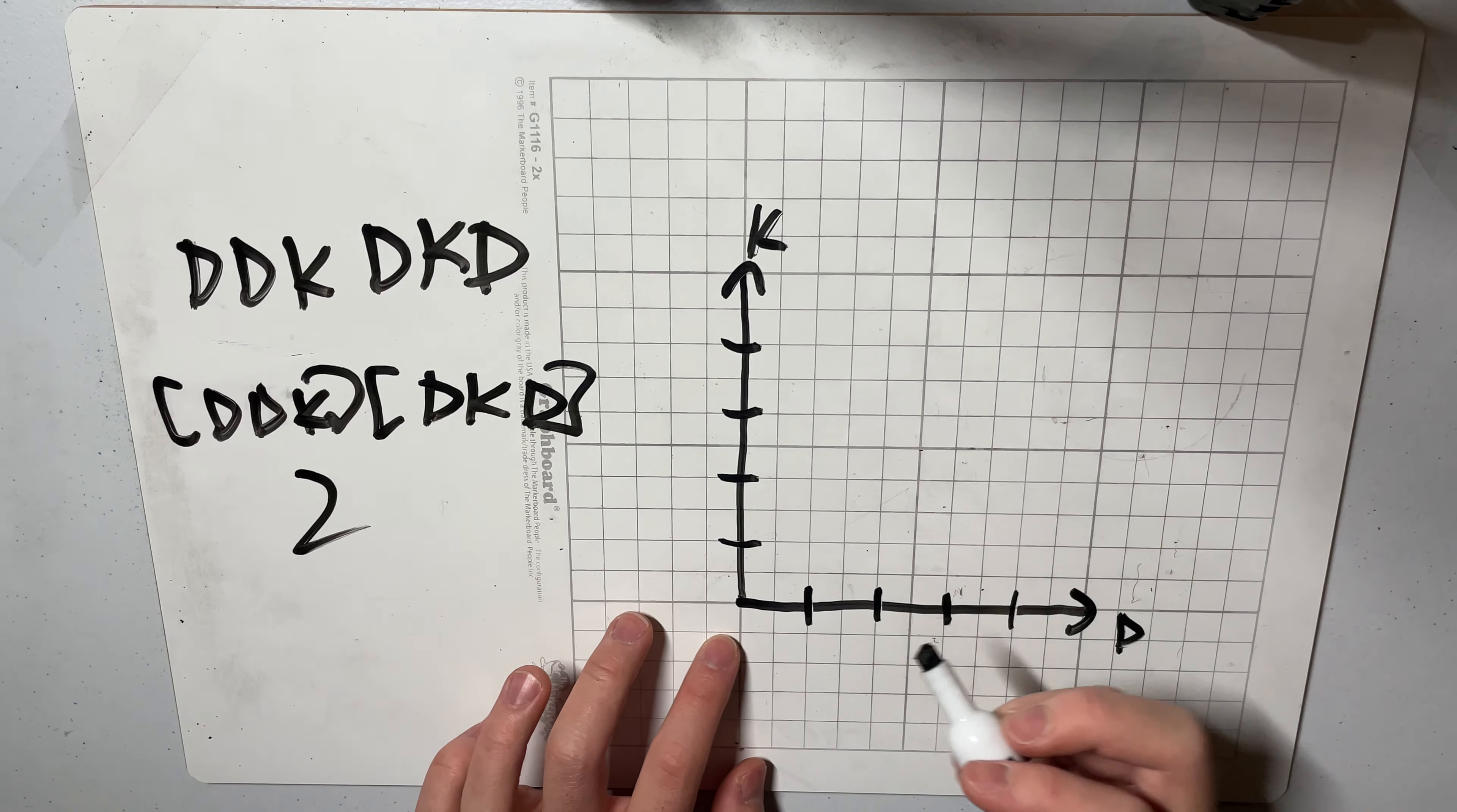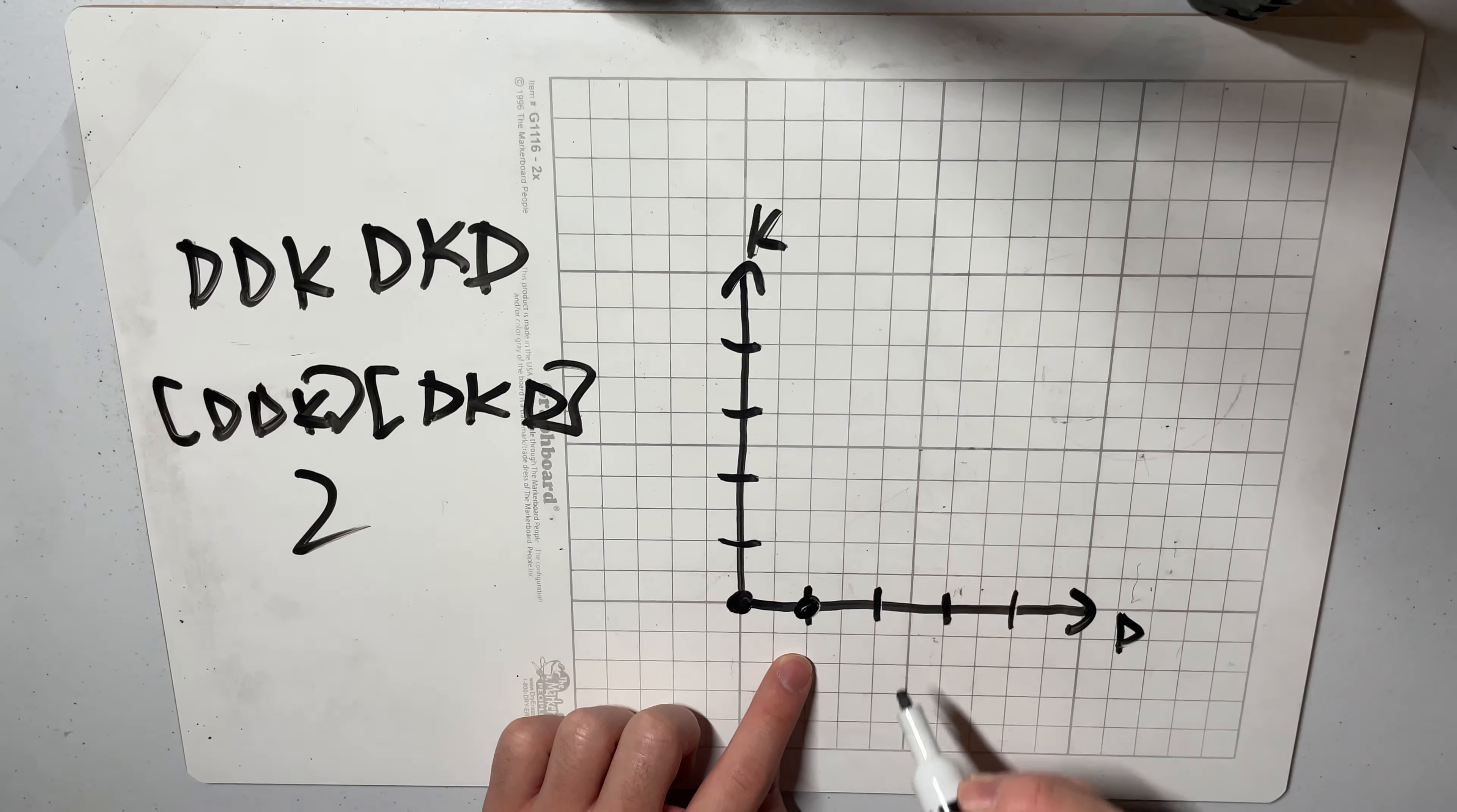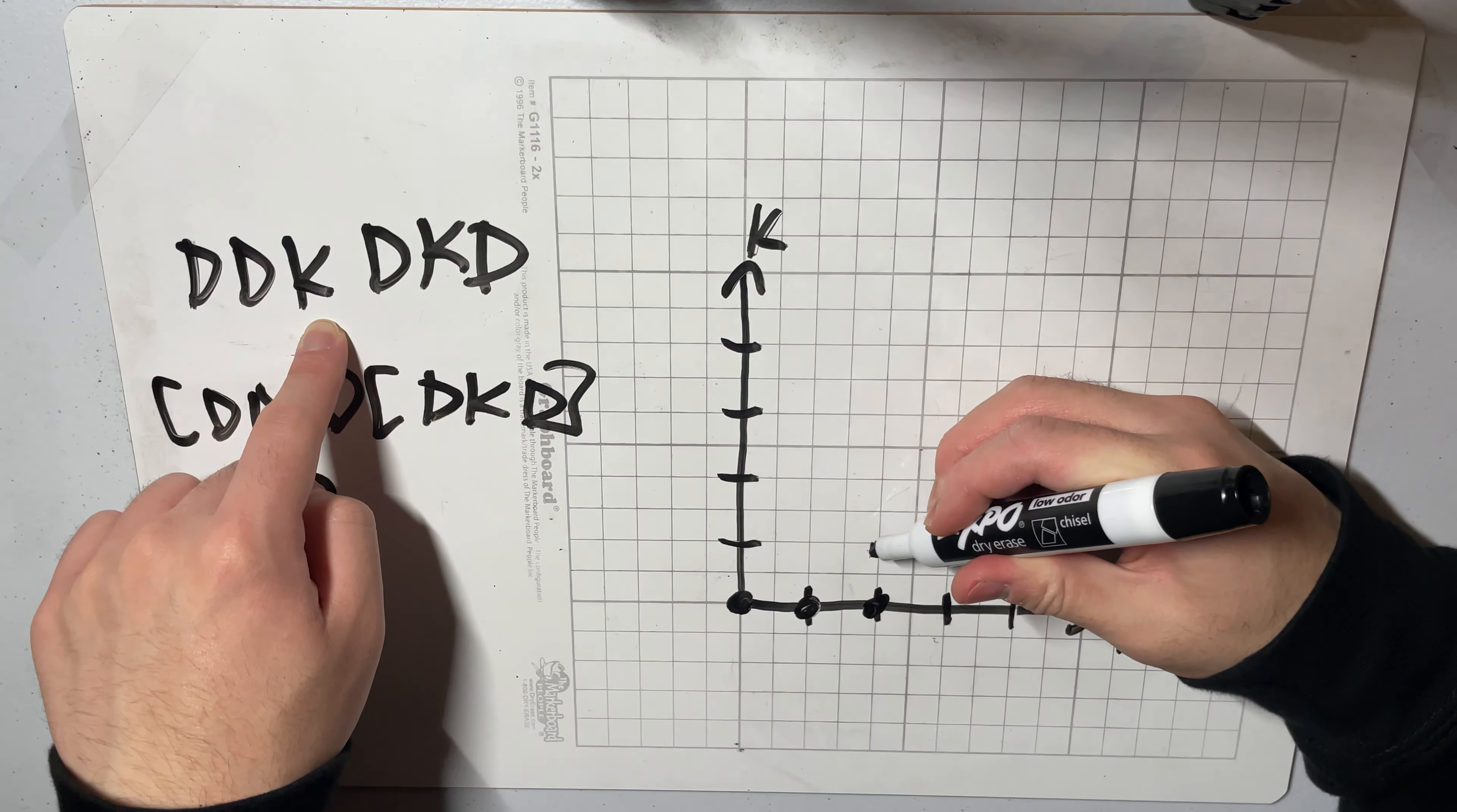So the prefix of length 0 is obviously located at the origin because it's 0,0. The prefix of length 1 is just a d so there's one d and 0 k's so we put the point over here. The next point is two d's and 0 k's so next point goes over here. The third character is k so we go up because k is the y-axis so this is our next point.